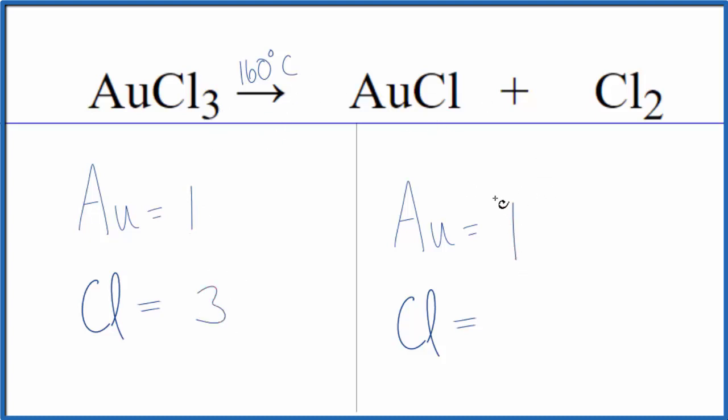Product side, we have the one gold and then one chlorine, plus we make sure we count the two here in the chlorine gas. So that gives us three.